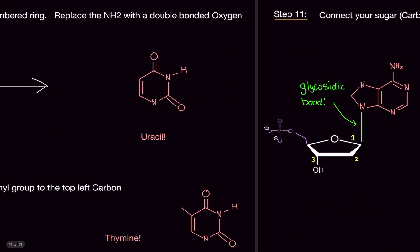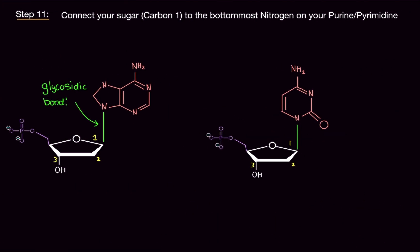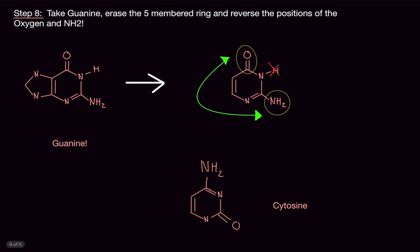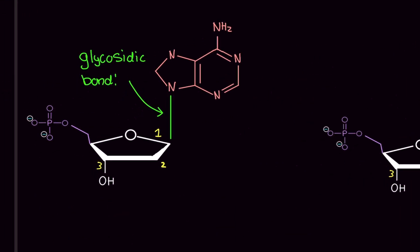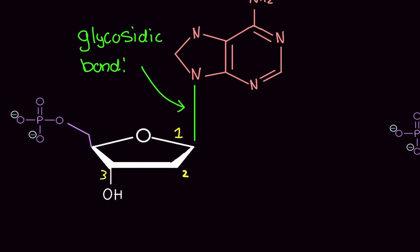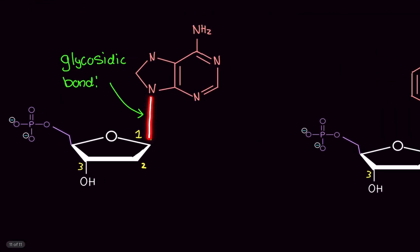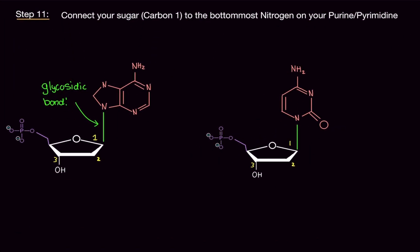It's not too bad — you just have to do this over and over again. Now you need to connect your sugar to the bottom-most nitrogen of your purine or pyrimidine. Whatever it is — uracil, thymine, guanine, cytosine, adenine — take the most bottom-left nitrogen. If it's a purine, we're looking at that nitrogen; if it's a pyrimidine, the bottom-most nitrogen. Simply draw a line connecting to carbon-1 on your sugar, and you've basically drawn your nucleotide. This bond is called a glycosidic bond. You should really know that.